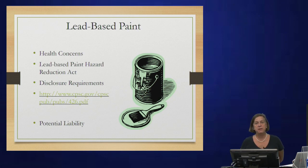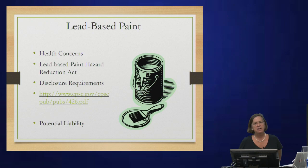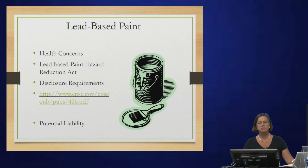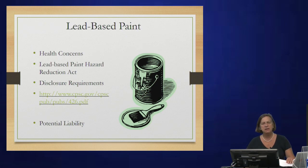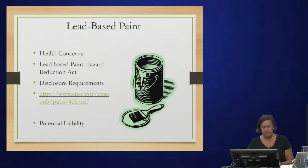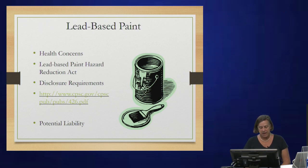Another potential hazard is lead-based paint. This causes health concerns primarily in children who eat paint chips or chew on window sills. The health concerns include kidney damage, developmental delay, and problems with red blood cells. Lead was used in paints prior to 1978 as a drying agent — a very effective drying agent. In terms of disclosure requirements, if you are selling or leasing a house, you must give the potential lessee or purchaser a pamphlet entitled 'Protect Your Family from Lead in Your Home.' Realty companies have been fined $20,000 for failing to provide this pamphlet.